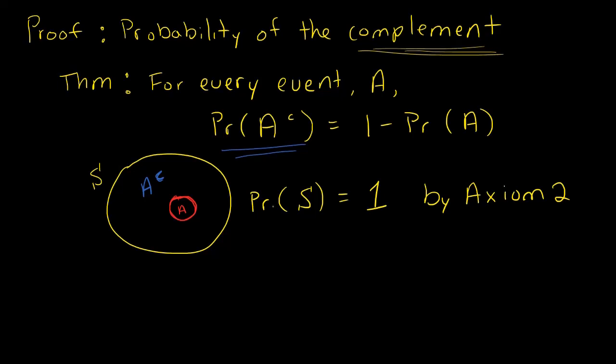So once you know that, then you can see from this diagram that the probability of the sample space is exactly the same thing as the probability of A union the probability of A complement. Because A union A complement is the sample space. So this must also be equal to 1. So A union A complement, remember what is union? Union means every element that belongs in A or belongs in A complement, all of those elements are going to make up our sample space.